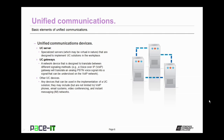Now let's talk about some unified communication devices. First up is the UC server. These are specialized servers, which quite often are virtual in nature, that are designed to implement unified communication solutions in the workplace. The UC servers work in conjunction with UC gateways. A UC gateway is a network device that is designed to translate between different signaling methods, such as a voice over IP gateway, which will translate an analog public switch telephone network voice signal into a signal that can be understood on the VoIP network.